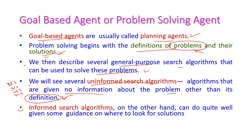After that we are going to see the informed search algorithms, where there is some guidance on where to look for solutions. Examples of informed search algorithms are greedy best first search, A* algorithm, AO* algorithm, and others. Informed search means that apart from the problem definition, we have some other information to reach the solution.